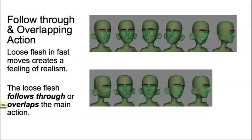Here's another example. Here's a character shaking its head very rapidly, and the main action here is the character shaking its head. And then the soft, loose flesh in the face will tend to follow through or overlap the main action of the character.